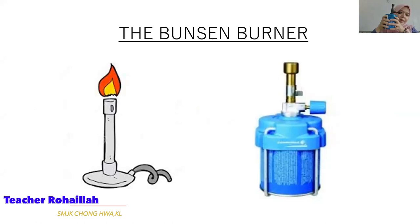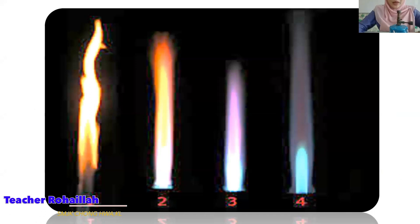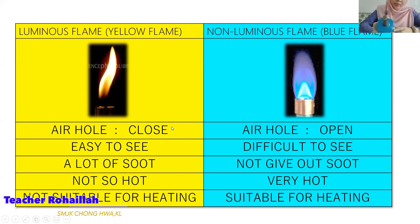Now, the Bunsen burner. You need to light it up yourself — you are a science student. Look at the four flame types shown: which one is the correct flame? Number four is the correct flame you need to get — not number one. Yellow color flame is a luminous flame, while blue color is a non-luminous flame.